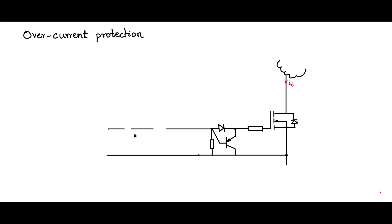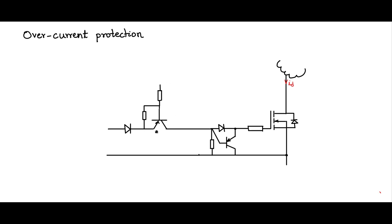Let us do some modifications to the circuit. I am going to put a series PNP switch here with a two-resistor drive. If the voltage at this point is high, there is no current flowing in the resistor and therefore no base current, so this series pass switch is off and the drive is cut off - the gate capacitance will discharge and the MOSFET will switch off. If the potential at this point is low, then there is a possibility of current flowing through, providing a base drive, and this switch will be on.